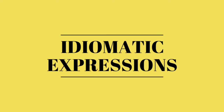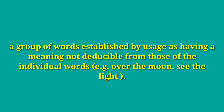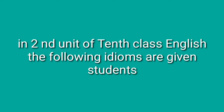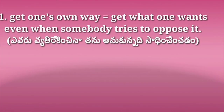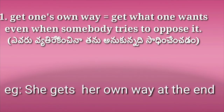Next we move on to idiomatic expressions. Friends, what is an idiomatic expression? An idiom is a group of words established by usage, having a meaning not deducible from the individual words. For example: 'over the moon,' 'on the edge,' and so on. In our 10th class second unit, the following idioms are given. Students should learn all these idioms and practice well.